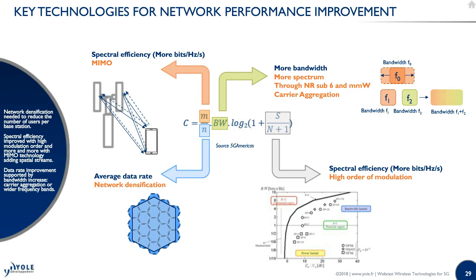The last element is about available bandwidth. To achieve more bandwidth, two solutions exist: one is to get more spectrum — especially through new radio bands in sub-6 GHz and millimeter wave, which is coming now. The other is carrier aggregation, which is the current mainstream technology to improve bandwidth and network capacity.